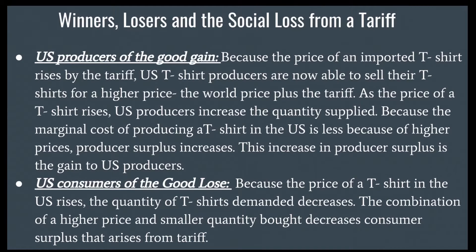Winners, losers, and the social loss from a tariff. U.S. producers of the good gain. Because the price of an imported T-shirt rises by the tariff, U.S. T-shirt producers are now able to sell their T-shirts for a higher price — the world price plus the tariff. As the price rises, U.S. producers increase the quantity supplied. Because the marginal cost of producing a T-shirt in the U.S. is less than the higher price, producer surplus increases. This increase in producer surplus is the gain to U.S. producers.